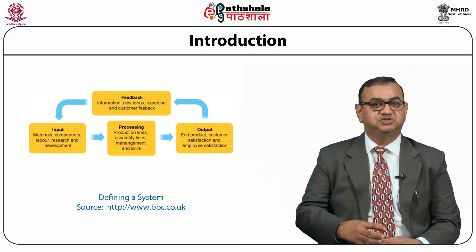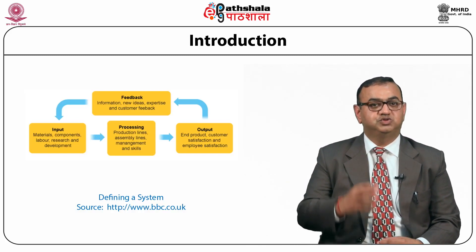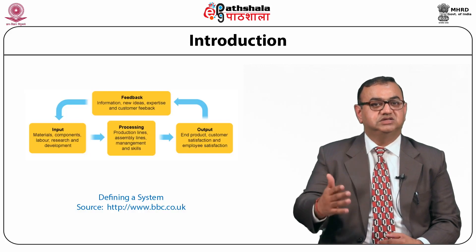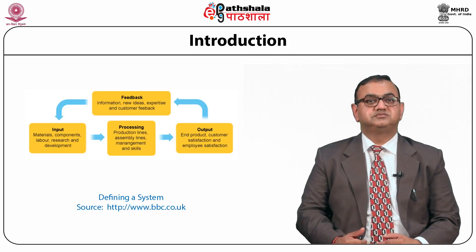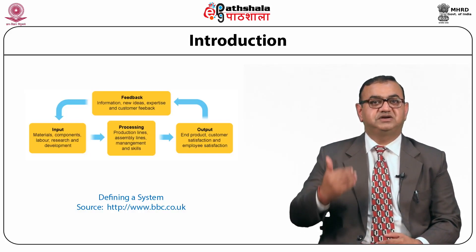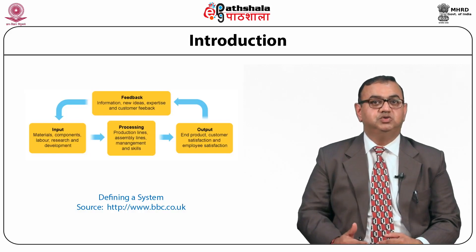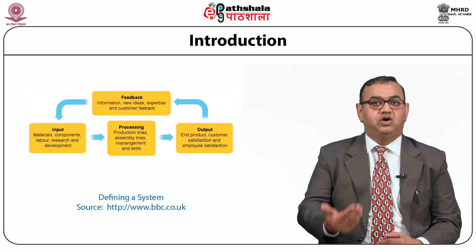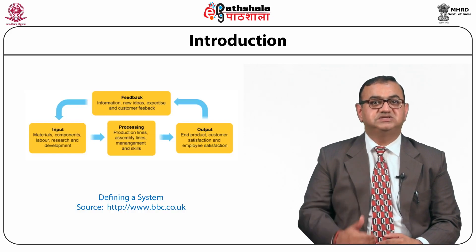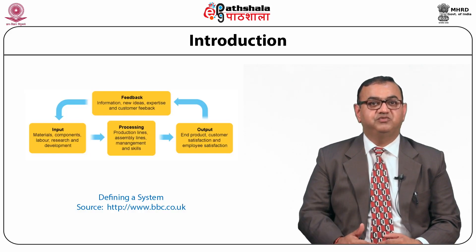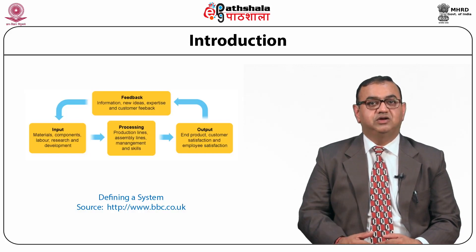Information systems transfer raw data into useful information through basic activities: input, processing and output. A business perspective suggests an information system provides a solution to a problem or challenge facing a firm, and represents a combination of management, organization and technology elements.